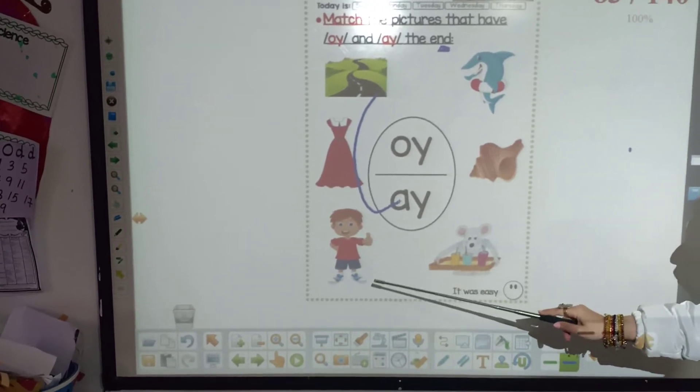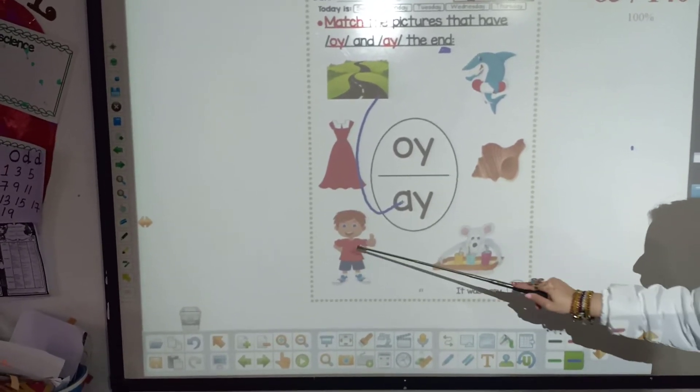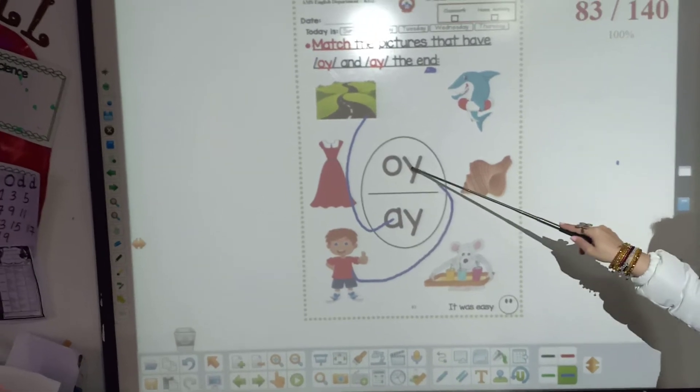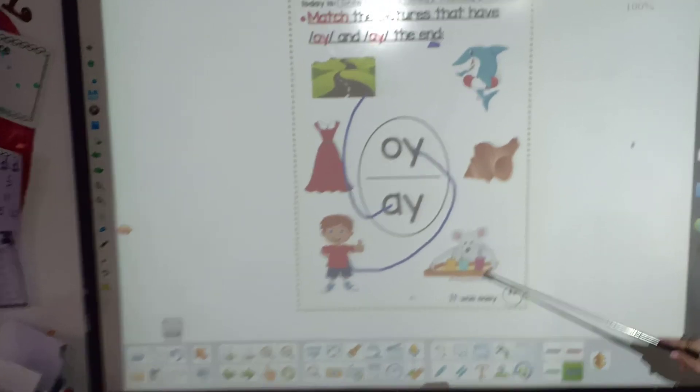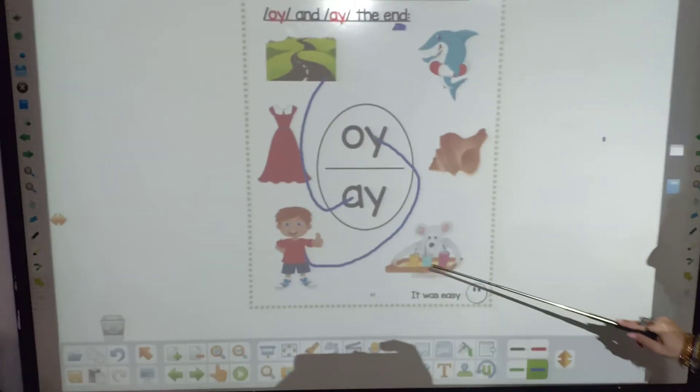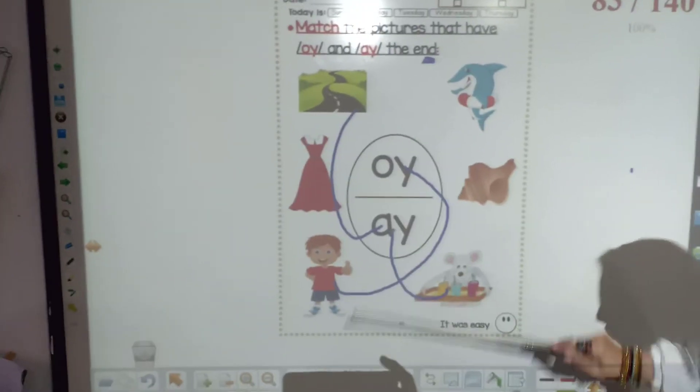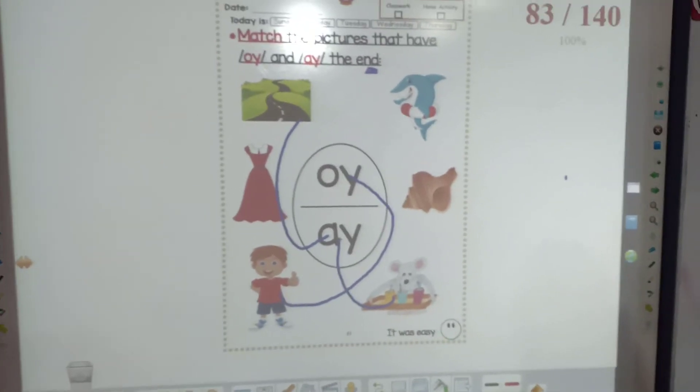The next one is boy. B, oy. So, match boy with alternative oy. The last one is tray. T, R, ay. Match tray with alternative ay.